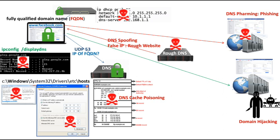There are certain countermeasures against all of these attacks. The first countermeasure is to harden all the components of the Domain Name System, including your laptop, DNS server, and DHCP server, by removing unnecessary services from these components.